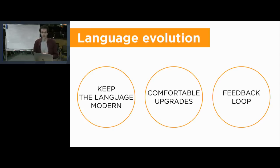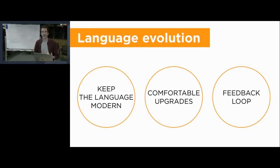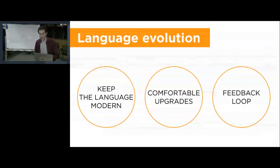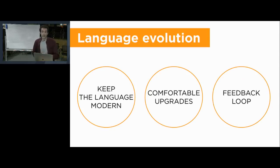The third principle is the feedback loop. When we introduce something new or change something old, we want your feedback first and foremost. This is why we have preview builds, experimental features, and why we design in the open — to understand what you find interesting and what addresses the needs of users. These three principles combined give us the sense of being up-to-date and relevant, which is what we actually want Kotlin to be.